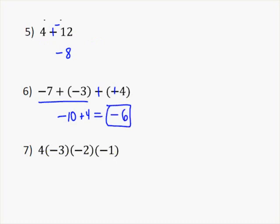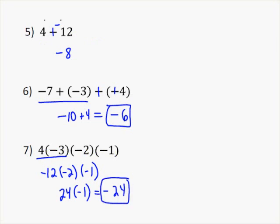On the last one, it's just a multiplication problem. 4 times negative 3 is negative 12. Negative 12 times negative 2 is positive 24. Then 24 times negative 1 is negative 24. Remember, if you have two negatives, it's a positive. And then one negative and one positive, then it's a negative. That's why 24 times negative 1 is negative.